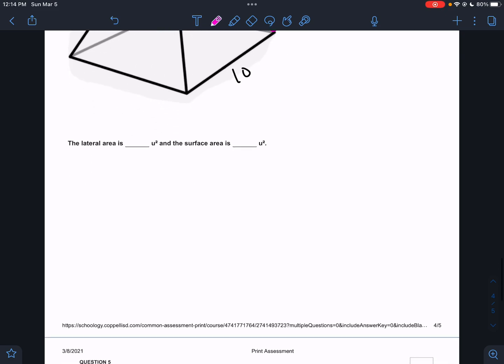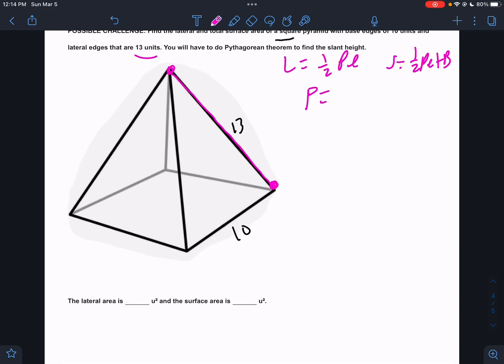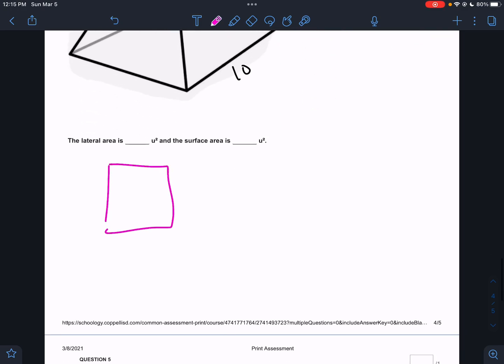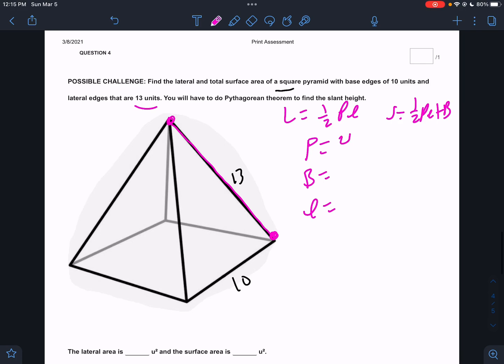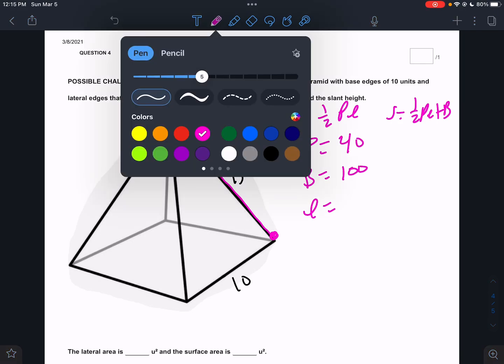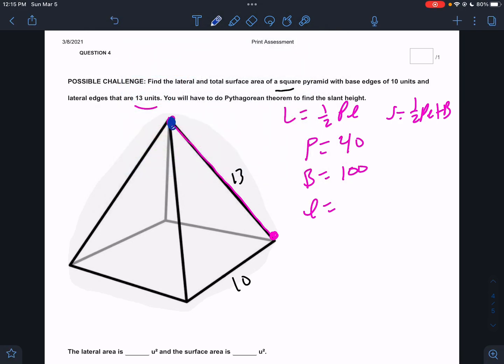We need a few things to do this. We need P. We need B. And we need the slant height. Well, P and B, the base are both based off the square. The square is 10 by 10. So the perimeter of that is going to be 10 times 4, 40. And the area of that is going to be 10 times 10, 100. So we know this is 40 and this is 100.